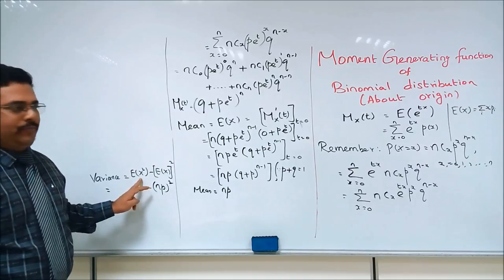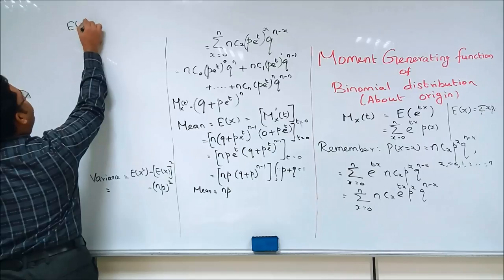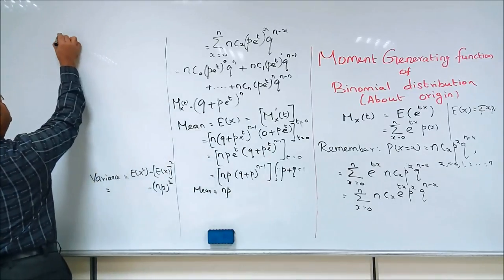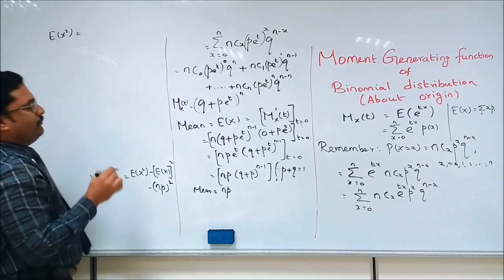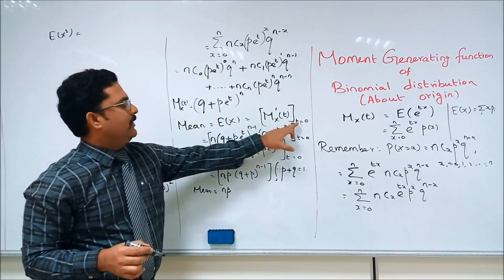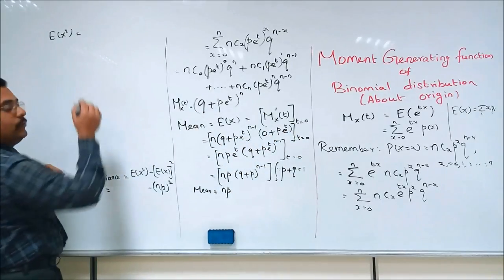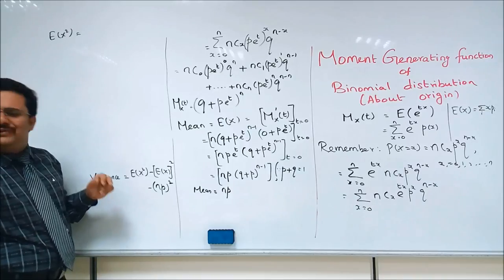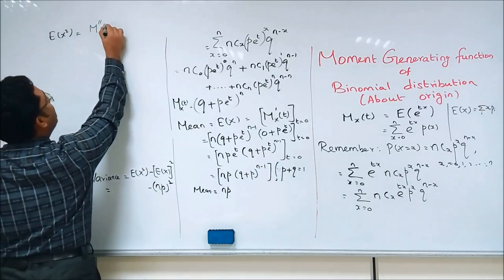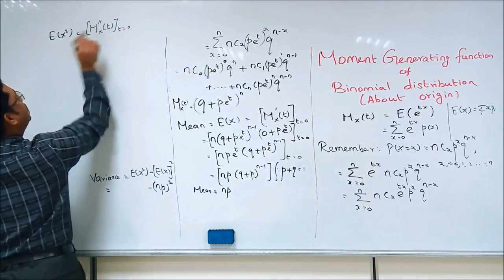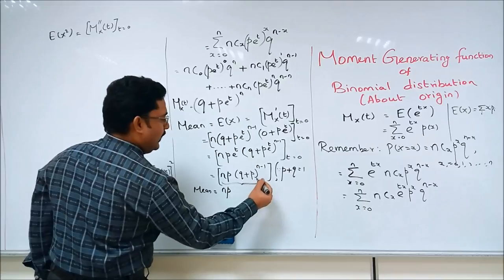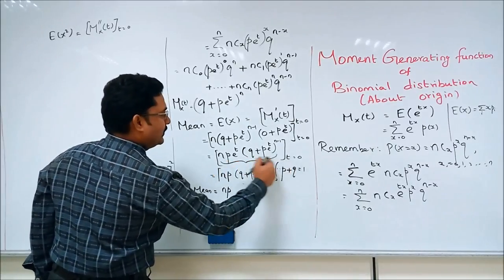Let us go for E[X²]. E[X²] is equal to the second derivative of our moment generating function at the point t=0. Let us differentiate again. The term before substituting t=0 is n times pe^t times (q + pe^t)^(n-1). We differentiate this again using the product rule, treating it as a uv rule.